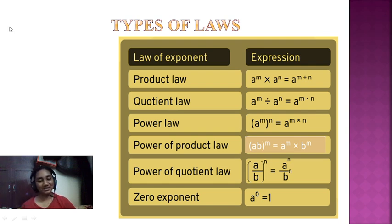Now let's speak about the power of the product law. Power of the quotient law means there is a product and that whole is in the power. Next, if it is a quotient law, there is a division and the whole is represented in power of n.